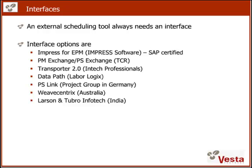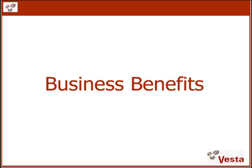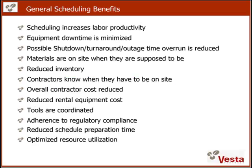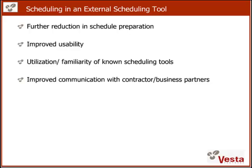Primavera and Microsoft are not the only vendors that sell project management tools that can be interfaced with SAP, but they are certainly the most common ones in the maintenance business. No matter which system you choose for performing scheduling, you are going to need an interface between SAP and the scheduling tool. We will now look at business benefits that might be gained by implementing or optimizing scheduling processes. Scheduling can increase labor productivity, minimize downtime, and much more. Depending on your organization, you might realize hundreds of thousands if not millions of dollars in business benefits, with additional benefits when using an external scheduling tool such as Microsoft Project or Primavera.